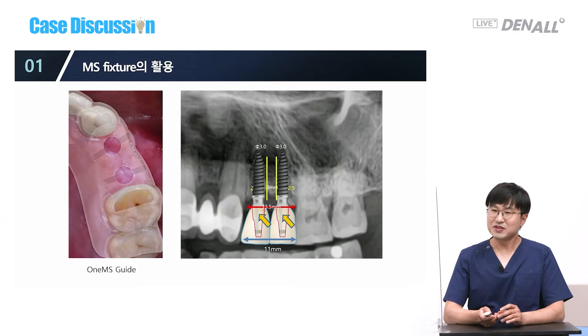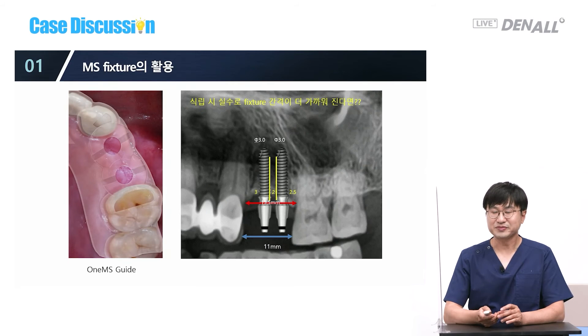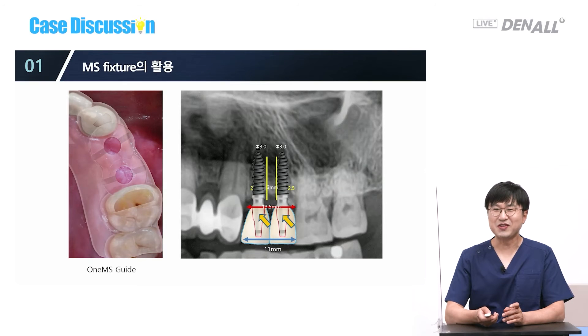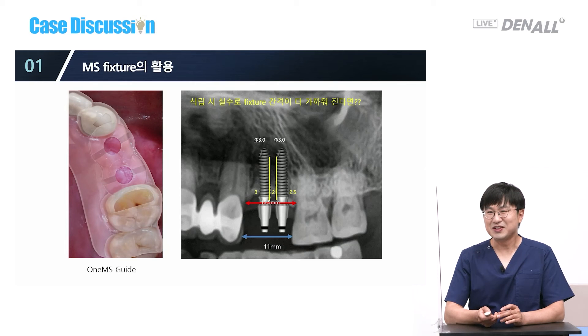The biggest strength of the MS fixture is that the distance between the fixtures and the prosthesis portion is very thin, giving us wider available space. The biggest problem is that an angled abutment cannot be used. When placing implants, we must consider whether prosthesis is possible. Therefore, a guide should be used. With MS fixtures, ideal placement is only possible using the guide.